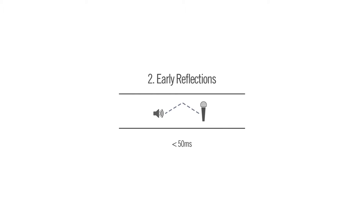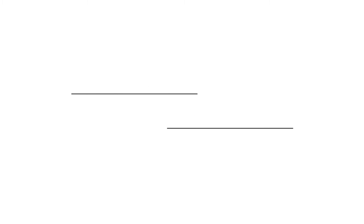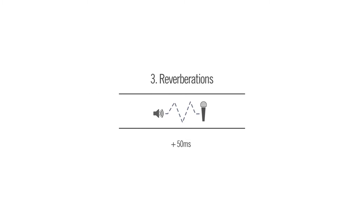Early reflections are categorised as sound that reflects off something but still enters the mic within 50 milliseconds of the direct sound first arriving at the microphone. These sounds tend to be perceived by the brain as not really making any difference to the sound at all. The sounds after 50 milliseconds after the original incident sound arrives at the microphone are considered to be reverberations.